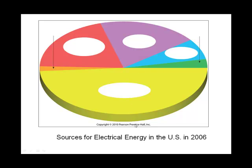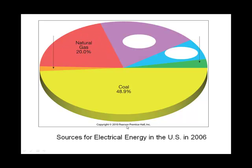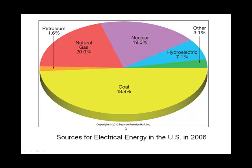How are we producing electrical energy in the United States? Based on 2006 statistics, a lot of it is burning fossil fuels — almost half is burning coal, followed by natural gas. Then there's nuclear power, hydroelectric, and other sources, with burning petroleum at about 1.6%.